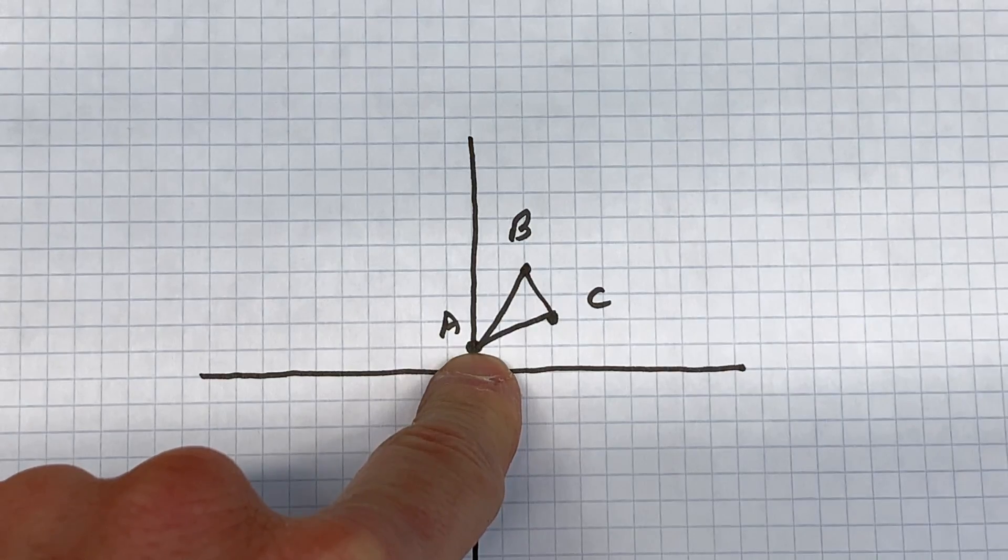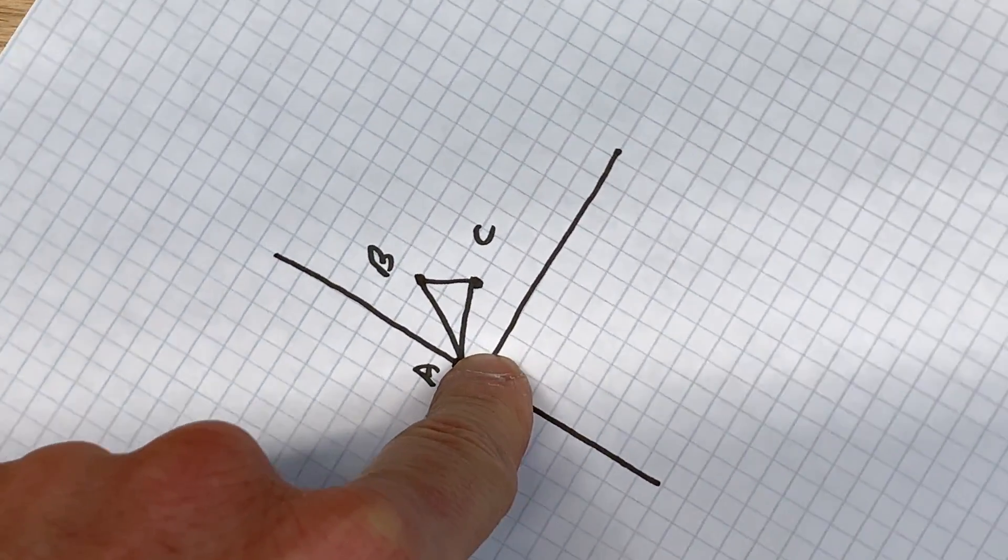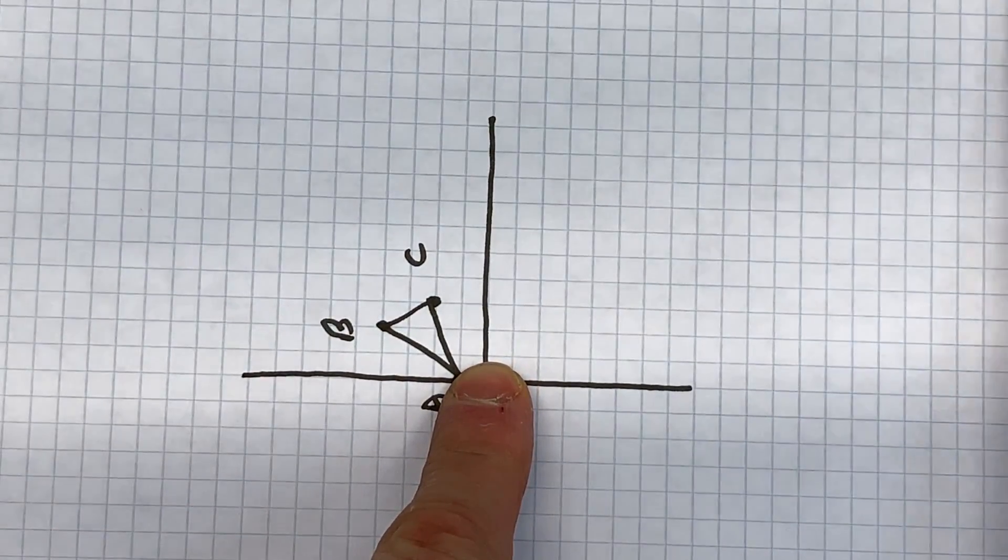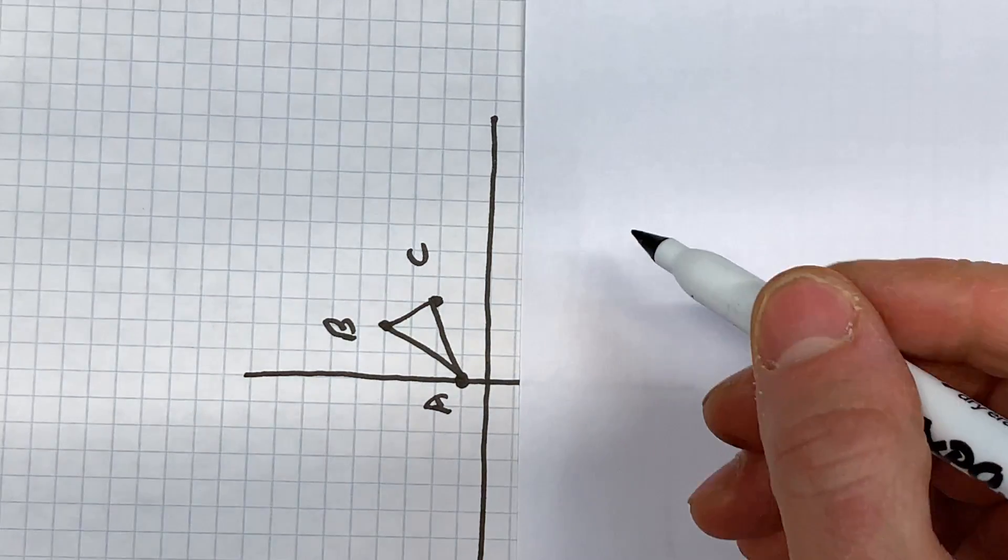For example, if we want to rotate 90 degrees counterclockwise, I would take this and rotate it a quarter turn to the left. Then take another sheet of paper and we're going to record the location of the points as they stand now.